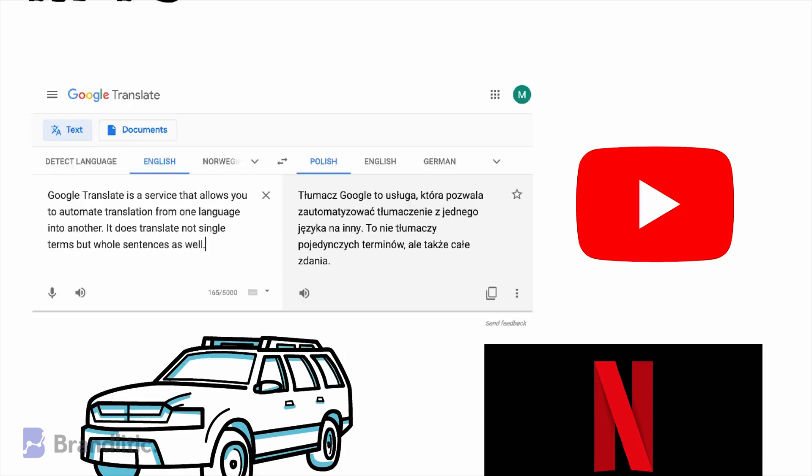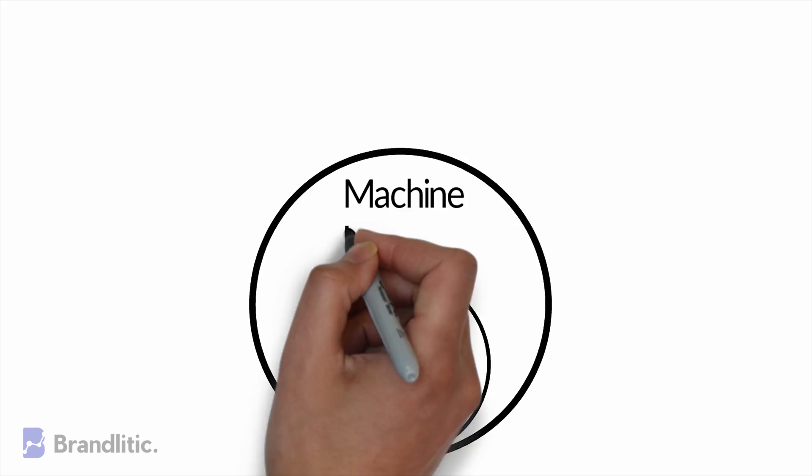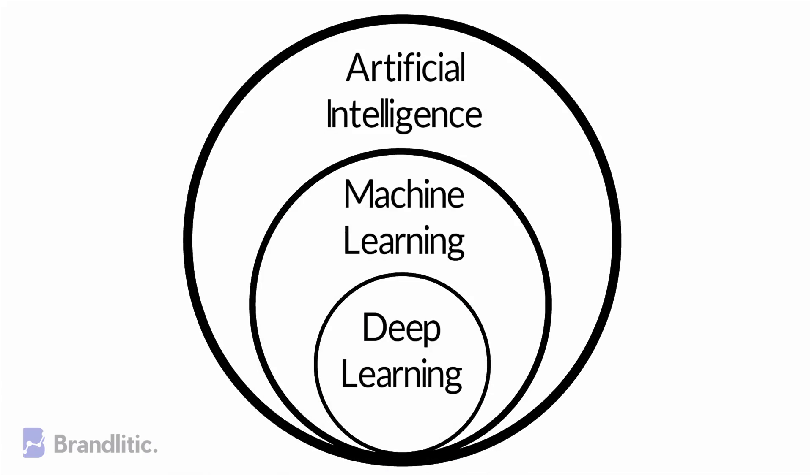Well, deep learning is a subset of machine learning, which on the other hand is a subset of artificial intelligence.